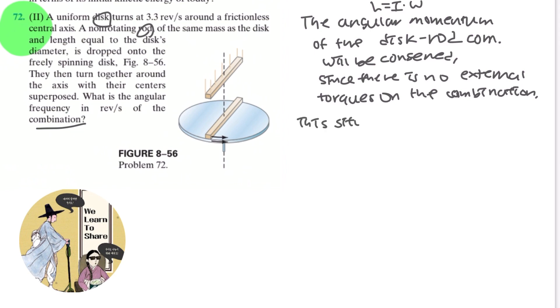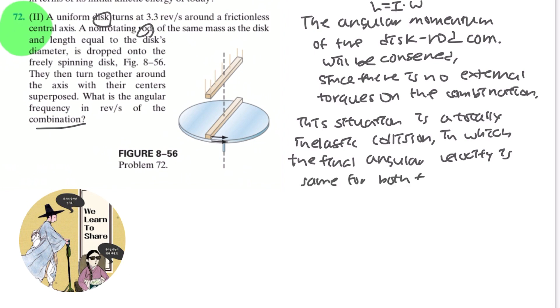And you can also note that this situation is a totally inelastic collision. So it will be a situation in which the final angular velocity is the same for both the disc and the rod.